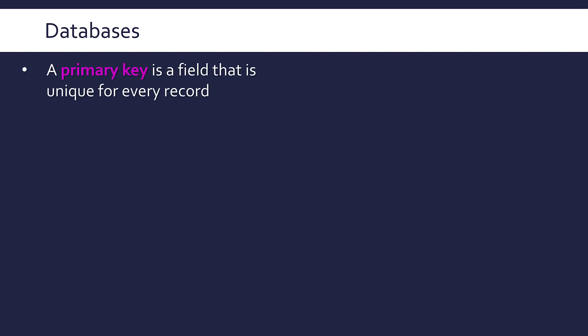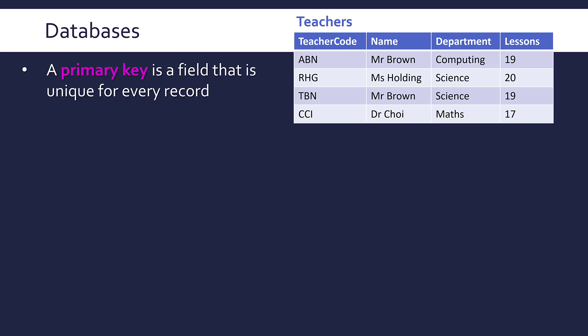Another key bit of terminology is primary key. A primary key in database terms is a field that is unique for every record in that table. Here is a table of teachers with their names, departments, and lessons. What field is unique for every record? Only one — that is teacher code. If you are making a formal database, you need to make sure you have a primary key for every table; you must have a unique field, otherwise you can't uniquely identify a record.